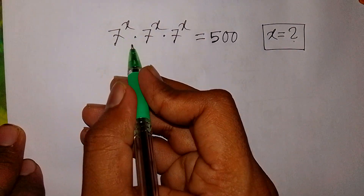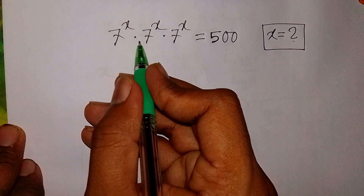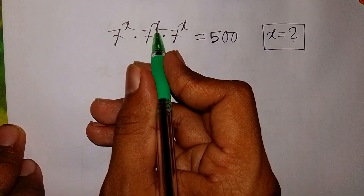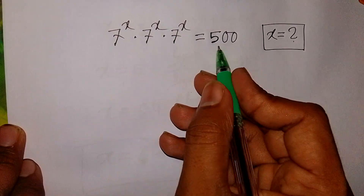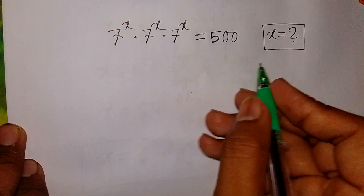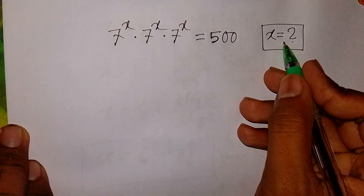7 power x times 7 power x times 7 power x is equal to 500. Find the value of x.